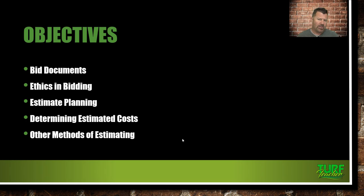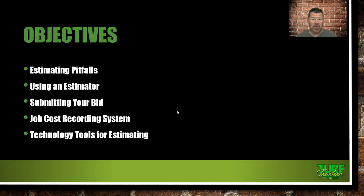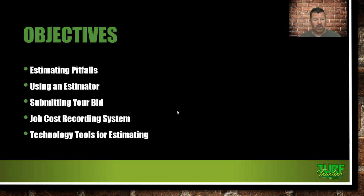A lot of you are already using some type of job costing software. Most people are familiar with QuickBooks, and there are other resources like Jobber, LMN software, and LawnBuddy — all kinds of pricing and scheduling software to help with bidding and estimating. We'll also cover estimating pitfalls, using an estimator, submitting your bid, job cost recording systems, and technology tools for estimating. Really, all you need is a cell phone since many software programs run on apps — you can estimate and schedule jobs right in the field.